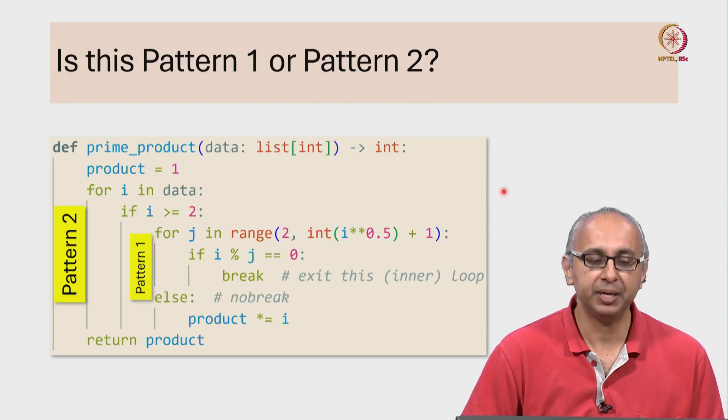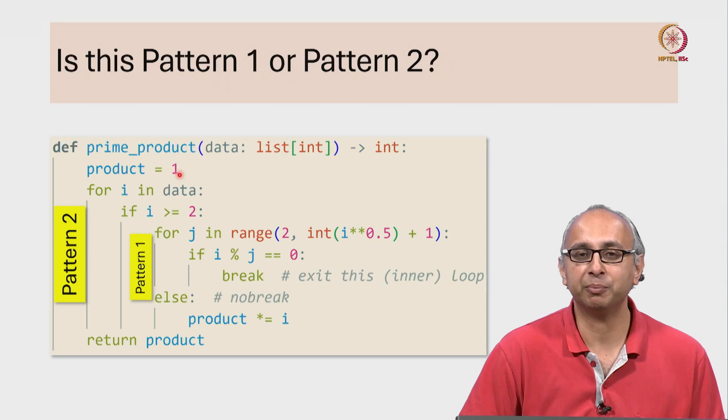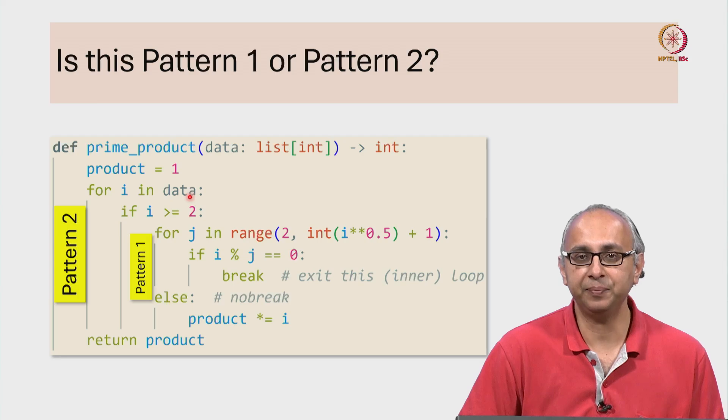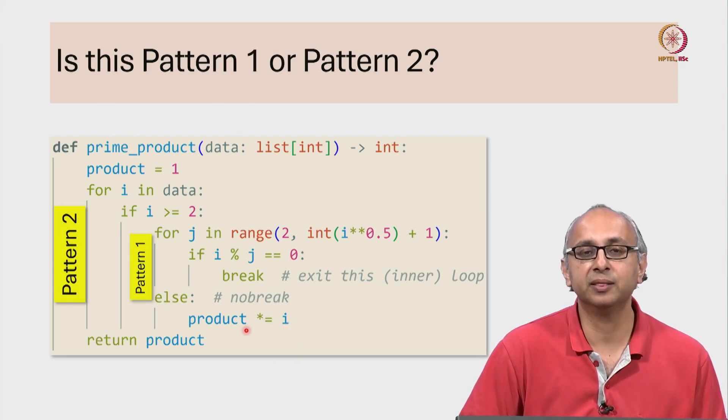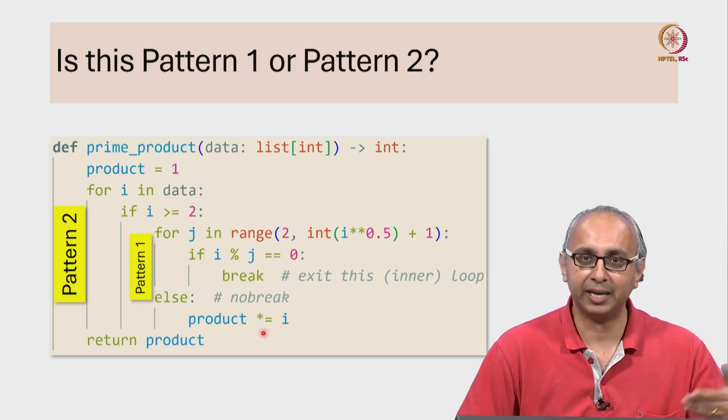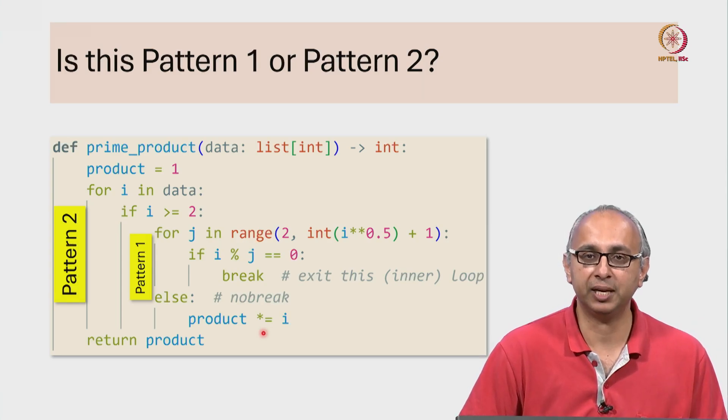Firstly remember in pattern 2 we are accumulating something and we can see that we have our accumulator variable product set to 1. Then we look at each i in data and finally we accumulate i in the product, in this case by multiplying. So that is the familiar accumulator pattern.